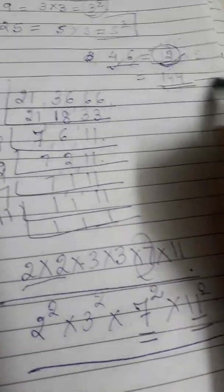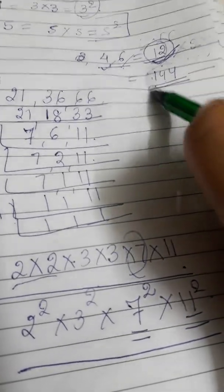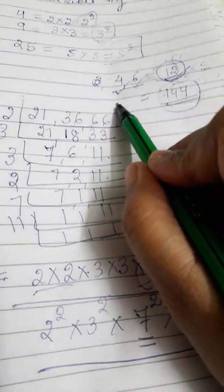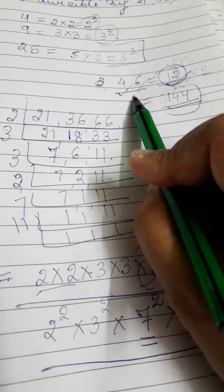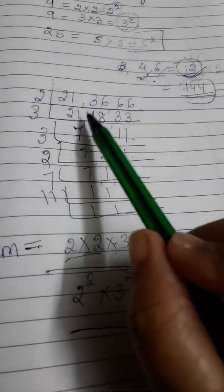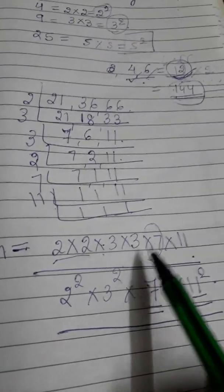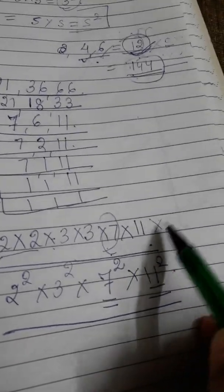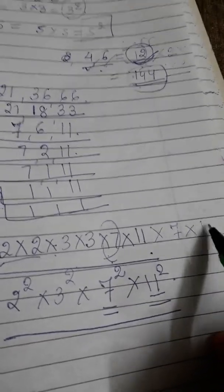If I am multiplying 12 with any number, say 2, 3, 4, whichever number, whatever answer I will get that will be divisible by 4 and 6 also. Same way, this is the LCM of 21, 36, 66. Now if I am multiplying this with further 7 and this with further 11.